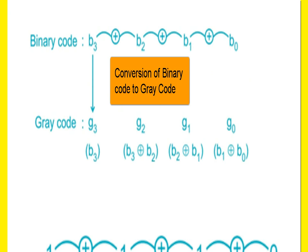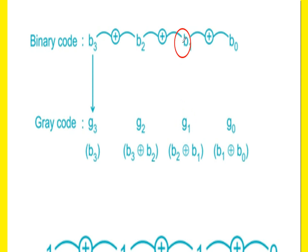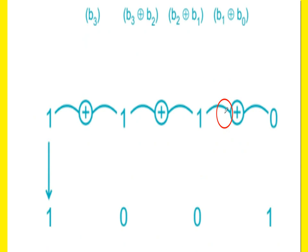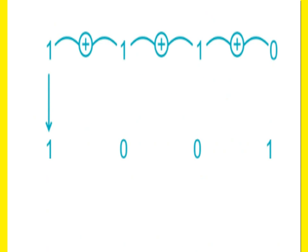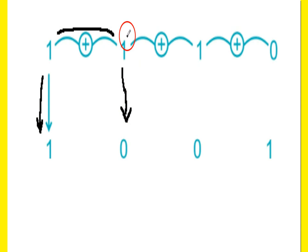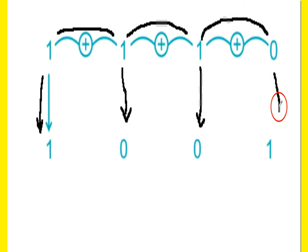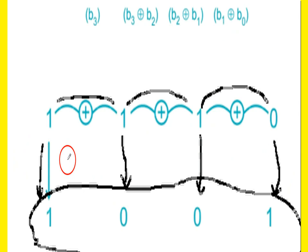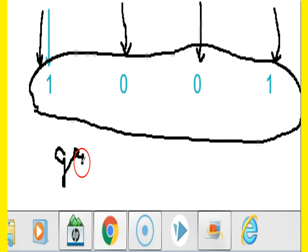Now, for binary to Grey conversion — going from B3 to G3, then adding B3 and B2 gives G2. The first bit: 1 goes as 1. Then 1 added to 1 becomes 0. 1 plus 1 becomes 0. 1 plus 0 becomes 1. So that becomes the Grey code — binary to Grey conversion is very simple.